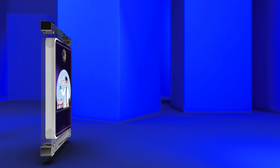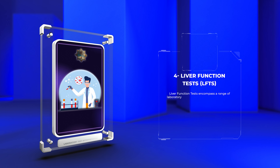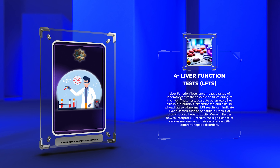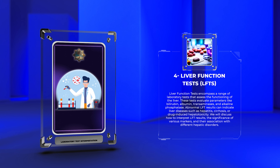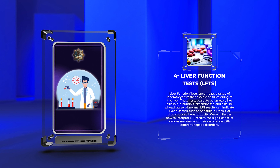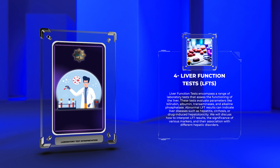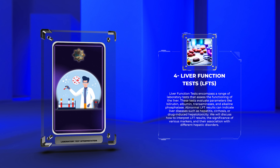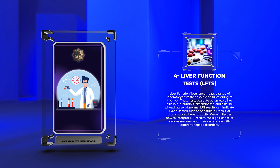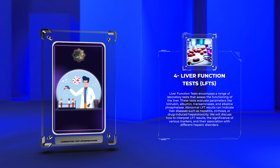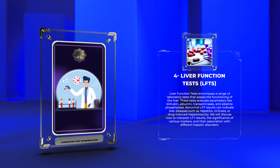Liver function tests encompass a range of laboratory tests that assess the functioning of the liver. These tests evaluate parameters like bilirubin, albumin, transaminases, and alkaline phosphatase. Abnormal LFT results can indicate liver diseases such as hepatitis, cirrhosis, or drug-induced hepatotoxicity. We will discuss how to interpret LFT results, the significance of various markers, and their association with different hepatic disorders.